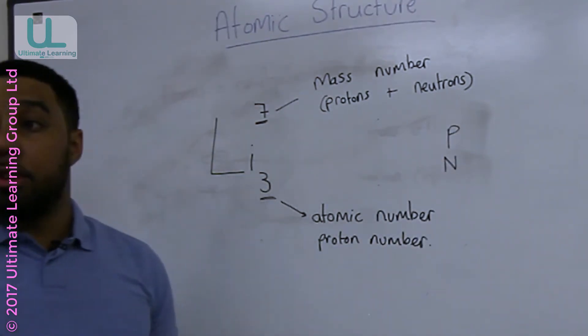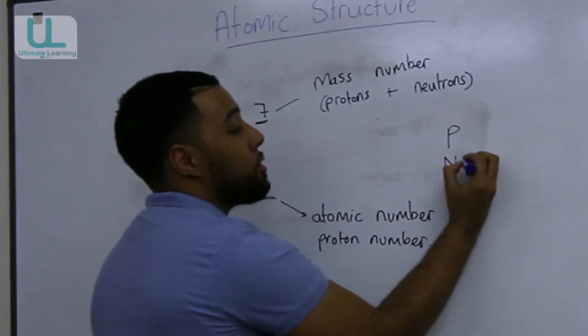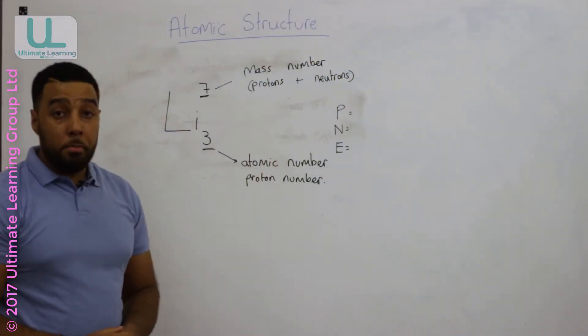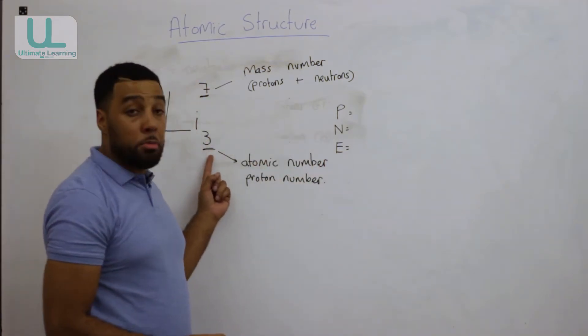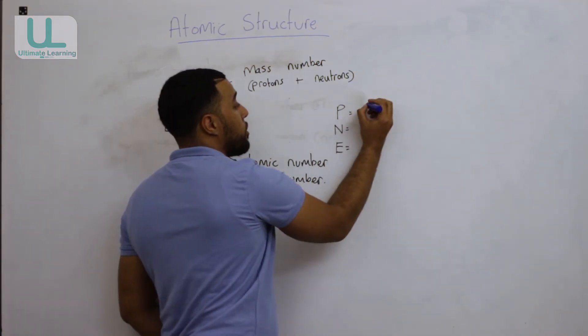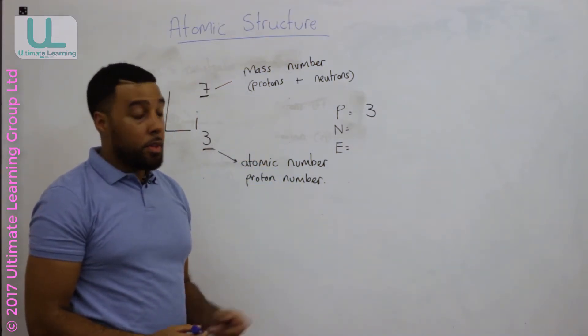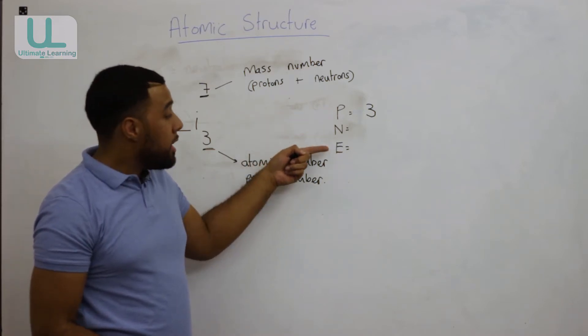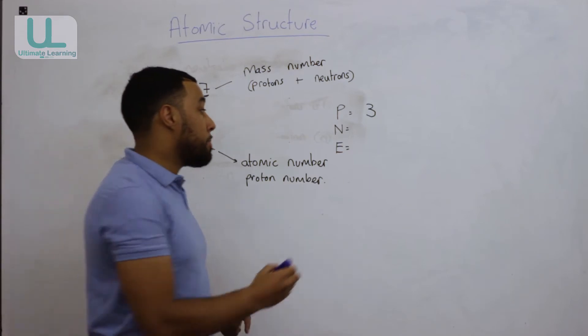Let me use lithium as an example. The P stands for proton, N stands for neutron, and E stands for electron. So looking at lithium, you should be able to calculate the proton number. Well that's simple because that's the number at the bottom, so the proton number is three. We already know that if an element has three protons it also has three electrons because the charges need to cancel.